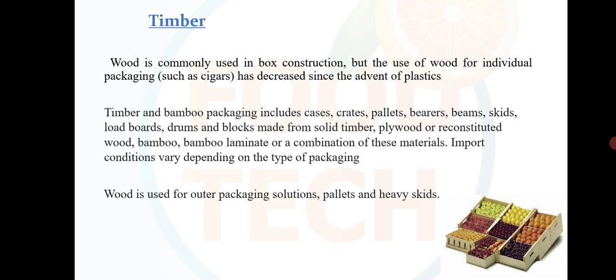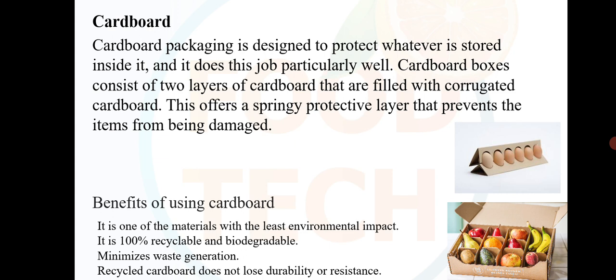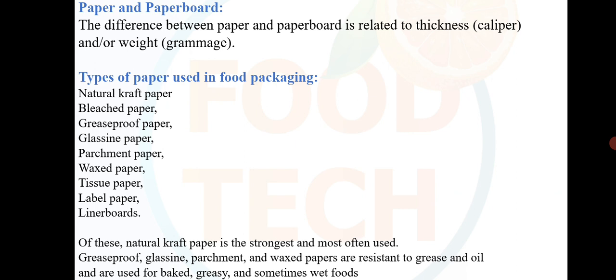Import conditions vary depending on the type of packaging. Wood is used for outer packaging solutions to protect whatever is stored inside it, and it does this job particularly well. Cardboard boxes consist of two layers of cardboard filled with corrugated cardboard, offering a springy protective layer that prevents items from being damaged. Benefits of using cardboard: it is one of the materials with the least environmental impact, 100% recyclable and biodegradable, minimizes waste generation, and recycled cardboard does not lose durability or resistance.